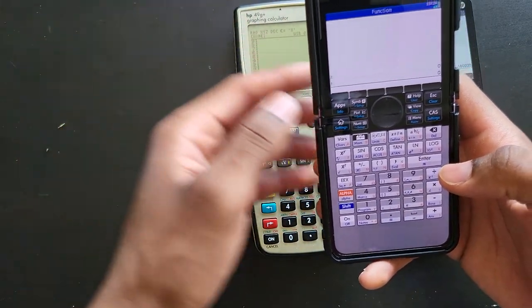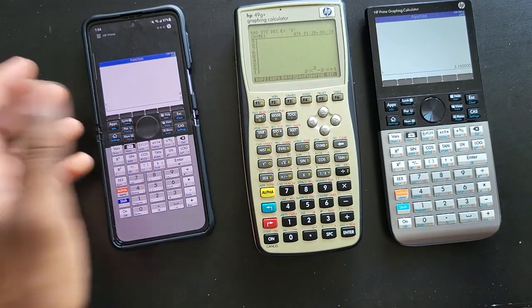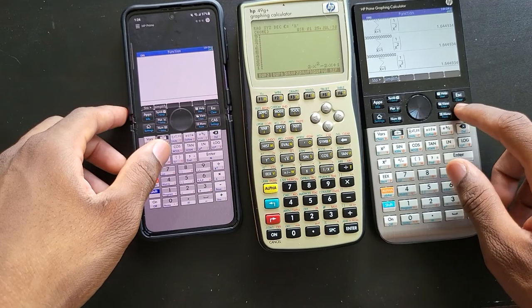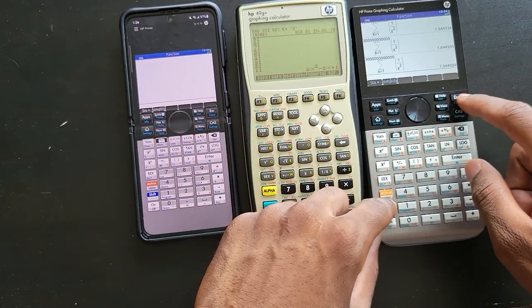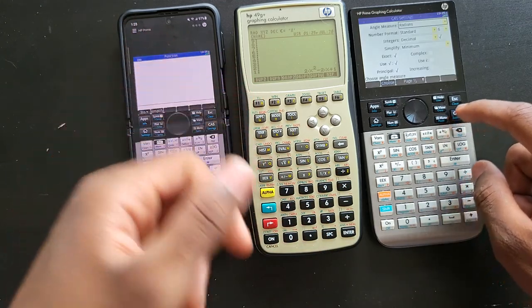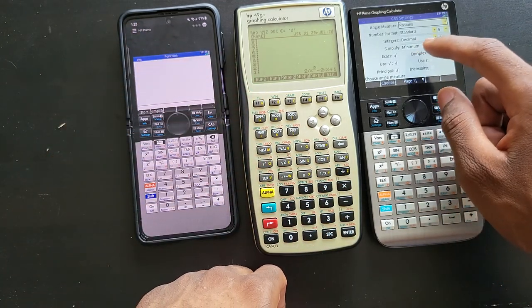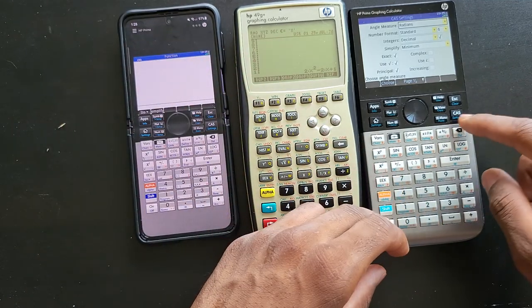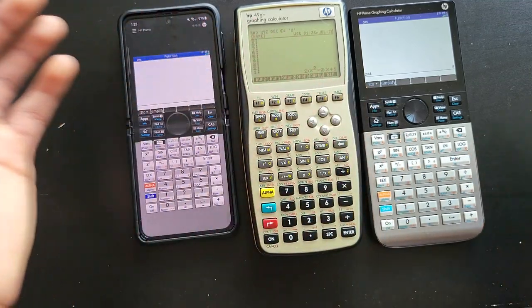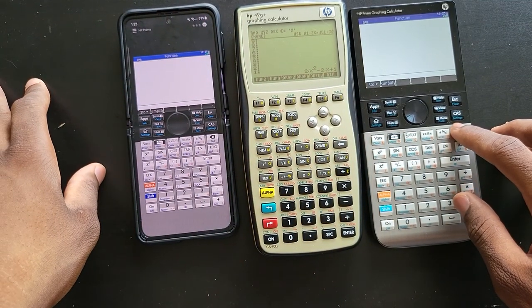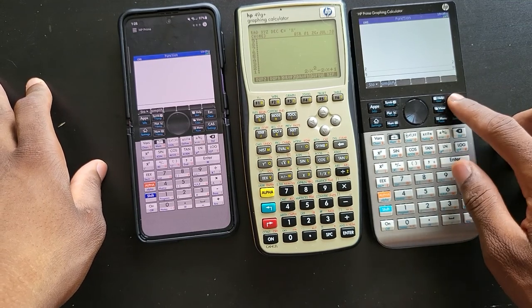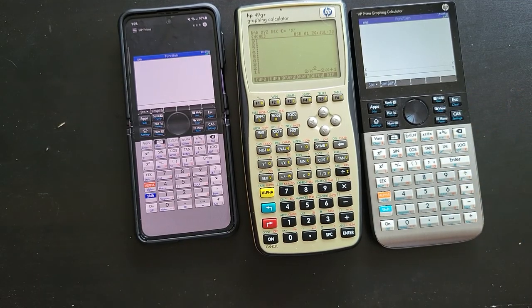You cannot use RPN in CAS mode. Everything I did was in home. If I clear my stack here, as you can see the mode is RPN, but under CAS you cannot choose RPN. CAS just operates in algebraic mode. There's nothing you can do about it. RPN is not available with CAS.